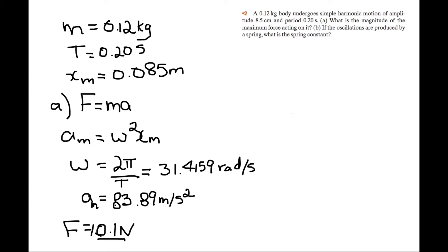So for part B, we'll use the formula: angular velocity equals the square root of k (the spring constant) divided by the mass. Rearranging this, we get k equals angular velocity squared times mass. So k equals 31.4159 squared times 0.12 kilograms, which gives us 118 newtons per meter.